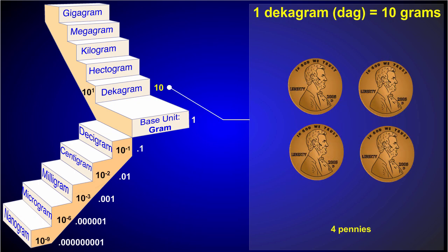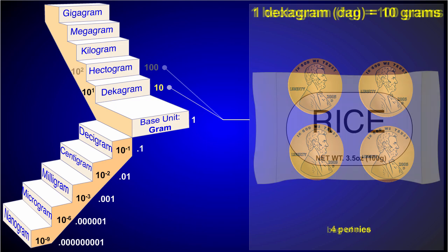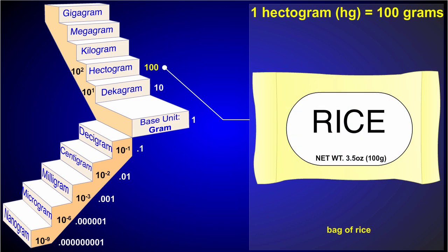A decigram is 10 times larger than a gram. This is about the mass of 4 pennies. A hectogram is 100 times larger than a gram. A bag of rice weighs about a hectogram.